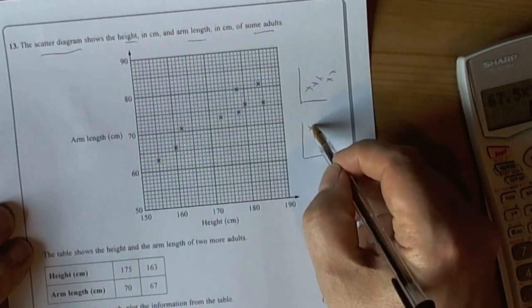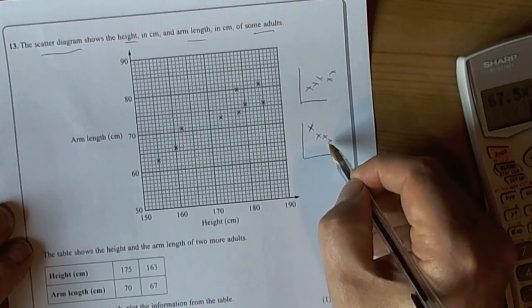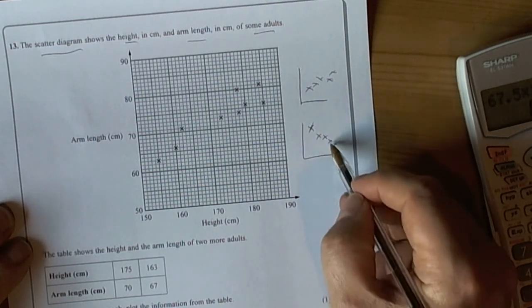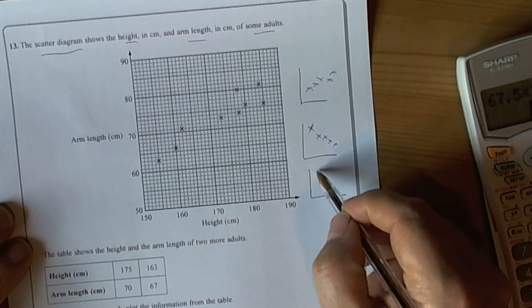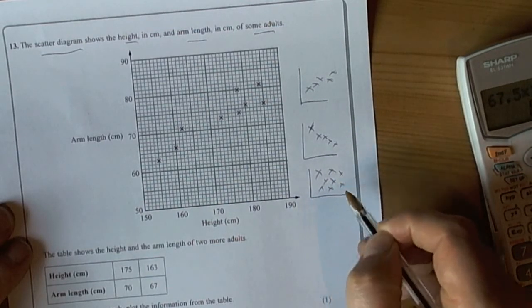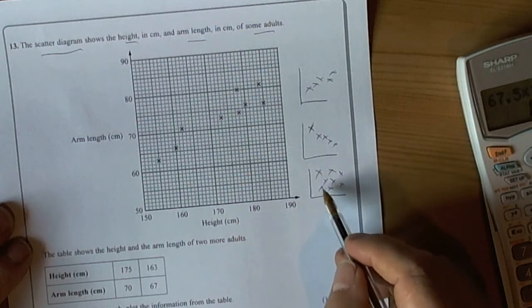Negative correlation, then you see the kind of opposite pattern going on as one variable increases the other decreases. And then you have what's called zero correlation, which suggests that there's no real relationship between the two values, no linear relationship that is.